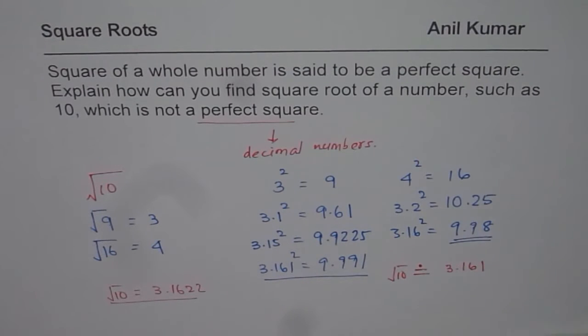Anyway, the idea of this video was to teach you how to estimate square root of a number which is not a perfect square. So, the idea is find closest perfect squares, which is 9 and 16 in this case. And then, since 9 is closer to 10, we start with 3.1 and increase the value.